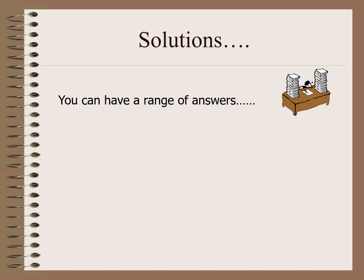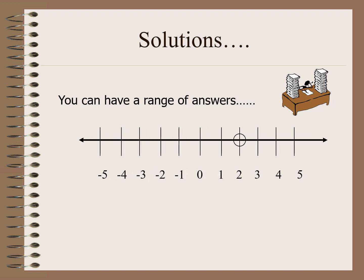Here are the following examples. We can have a range of answers using this inequality: x is less than 2, meaning all real numbers less than 2. We use an open dot, and the direction is to the left because it is less than.